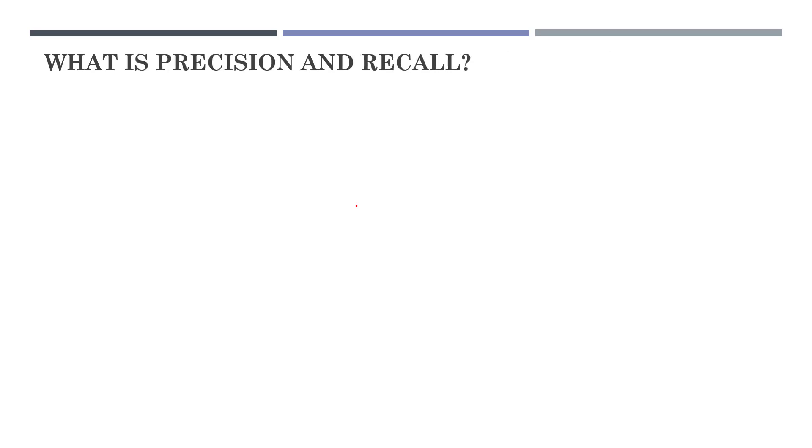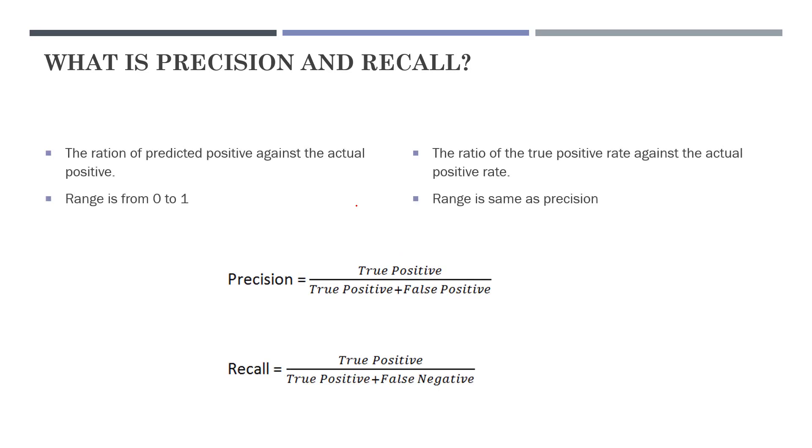The third question is: What is precision and recall? Precision, recall, accuracy, and F1 score are measurements of performance metrics. Precision is the ratio of predicted positive predictions against the actual positive, and its range is between 0 and 1. Recall is the ratio of true positive rate against the actual positive rate. The precision formula is true positive divided by true positive plus false positive. For recall, the formula is true positive divided by true positive plus false negative.